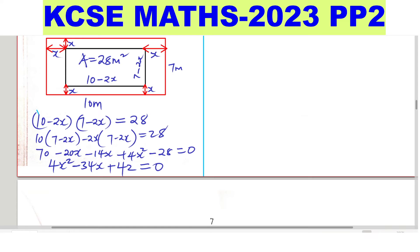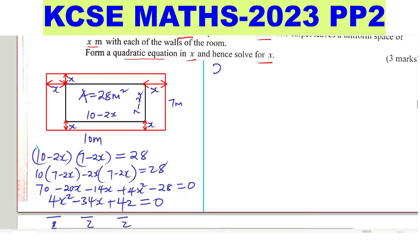So from there, we can divide everything by 2, and this will give 2x squared minus 17x plus 21 equals 0. So that is the quadratic equation. Now we need to solve it.